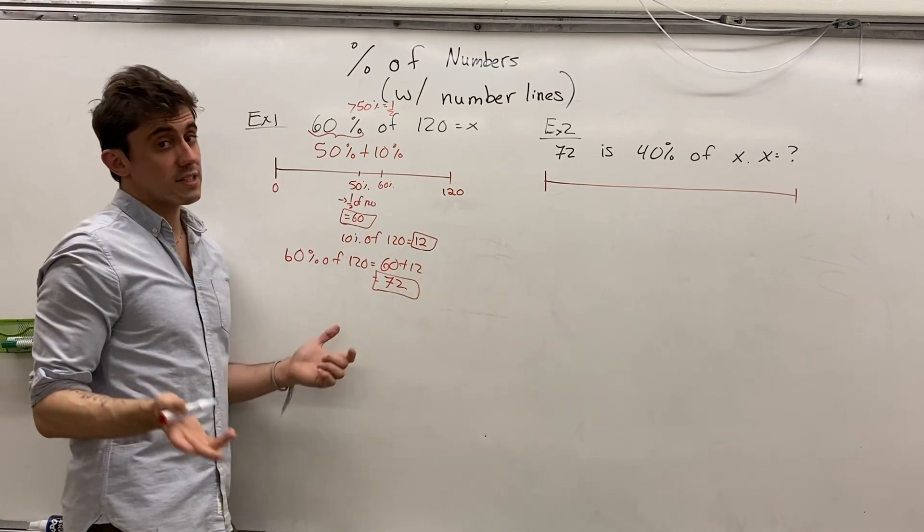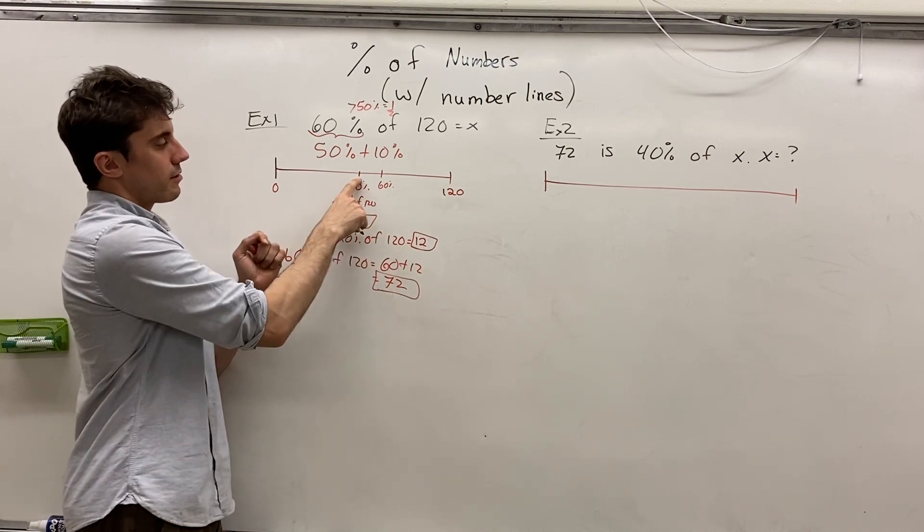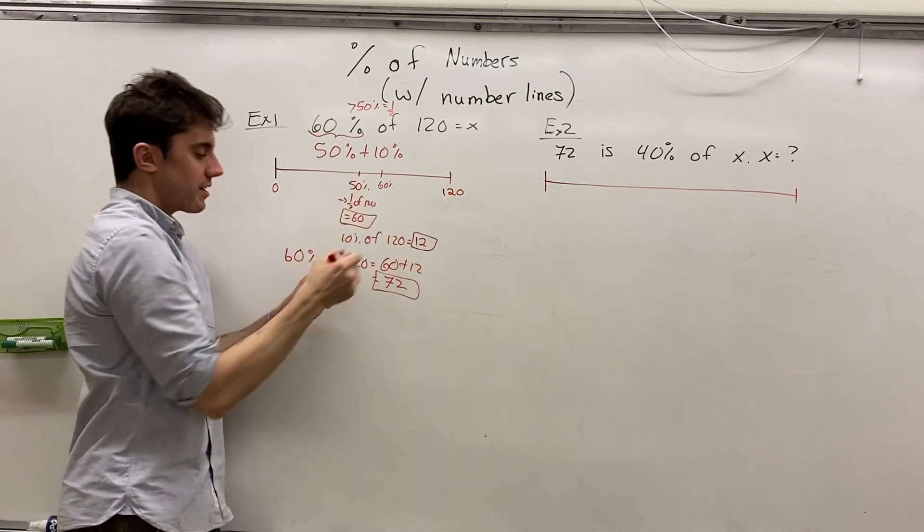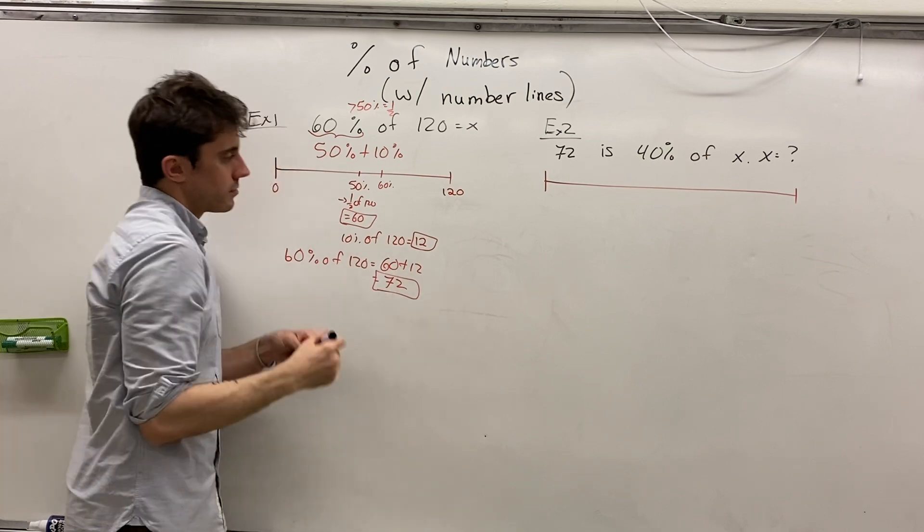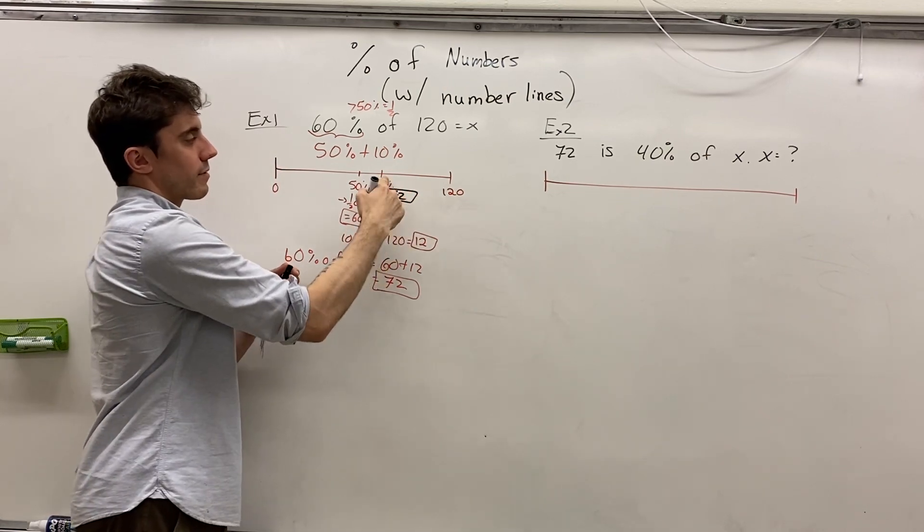Now this is only one way, but that definitely makes sense. Because if 60 is here on our number line and 120 is all the way over there, then 72 certainly makes sense to be around here on our number line.